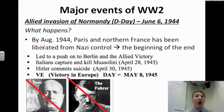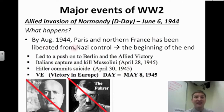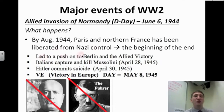By August 1944, Paris and northern France have been liberated — freed from Nazi control. This is the beginning of the end for the Nazis. It leads to a push all the way back to Berlin, the capital of Germany, and to Allied victory.